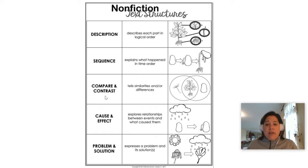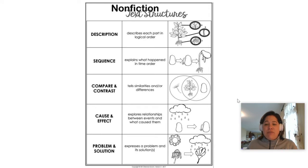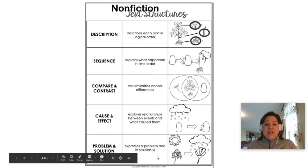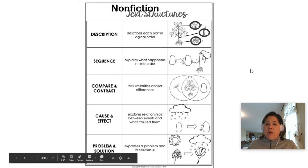An author can use compare and contrast, where he has two topics and he's comparing the similarities and the differences. An author can use cause and effect text structure, where he builds upon those relationships of where one thing makes something else happen. And an author can also build his text based upon problem and solution, where there is a problem and the text focuses on coming up with a solution for that problem.